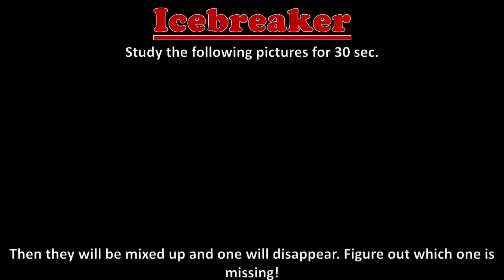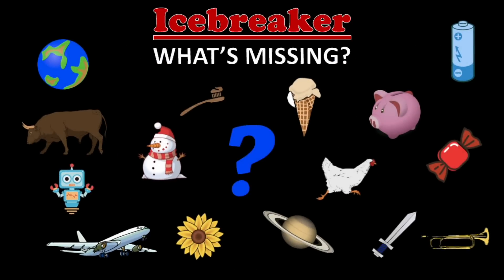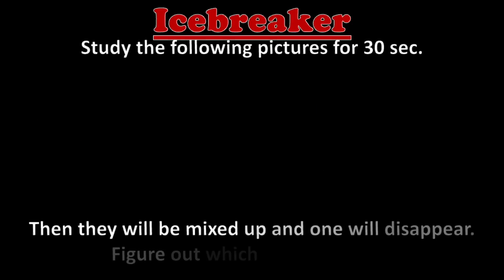For an icebreaker, you could play the "What's Missing" game. The way you do this is you display a slide with a bunch of random pictures on it like this, and then tell your class that they've got 30 seconds to study it. But then after the 30 seconds, you're going to show them another picture with all of the objects mixed up, and one of them is going to be missing. Their job is to identify which picture is missing. Depending on the age of your class, you could do a more difficult one or an easier one.